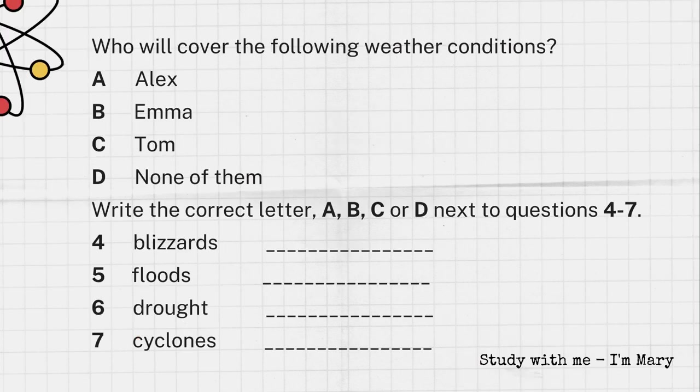I'd quite like to cover monsoons. I've been doing some reading on them, and they're quite interesting. Well, that sounds good. We should maybe take two areas each. That would make it easier for us to focus. Well, we've got lots to choose from. We could do blizzards, heatwaves, droughts, cyclones. There are loads.